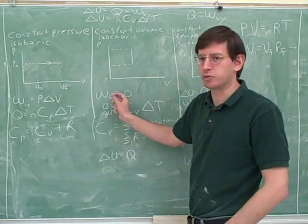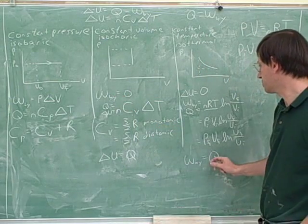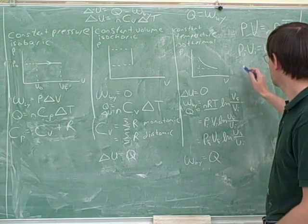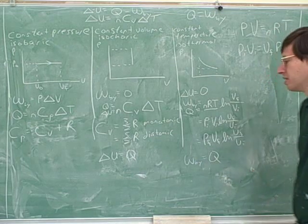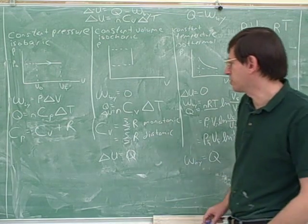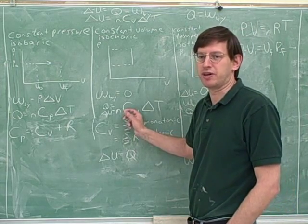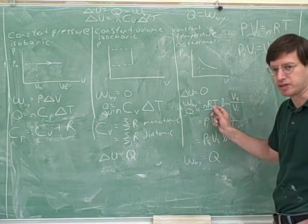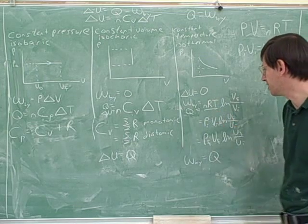Here, delta U is equal to Q because the work was constant. Well, here the work is equal to the heat because delta U is constant. We might as well have that as a separate entry. So there is no special little formula with a capital C over here because we don't need it. We can just use this formula for work for either the Q or the W.